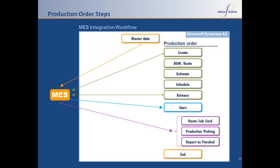Your AX system has the ability to schedule and release orders directly to your shop floor systems. The system can then report back on route or job card progress or deviations, picking or material use, and of course reporting completion.